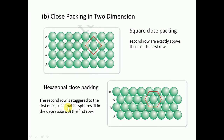It is clear that the second row fits into the depression of the first row. So we have two types of close packing in two dimensions: square close packing and hexagonal close packing. From these two-dimensional arrangements, we now move to three-dimensional structures.